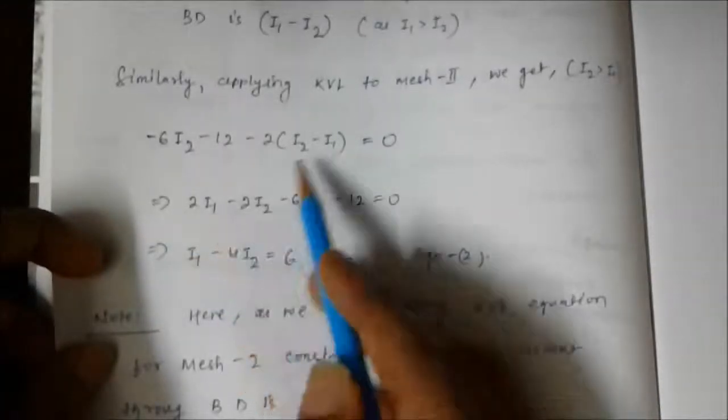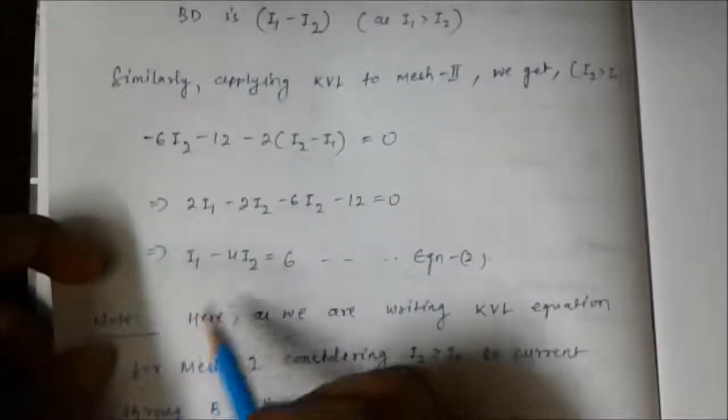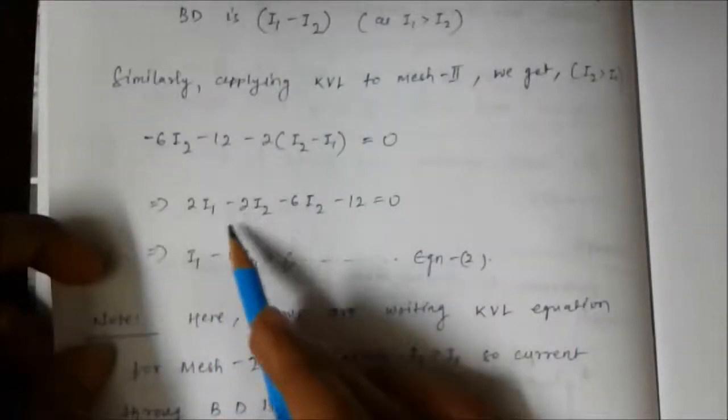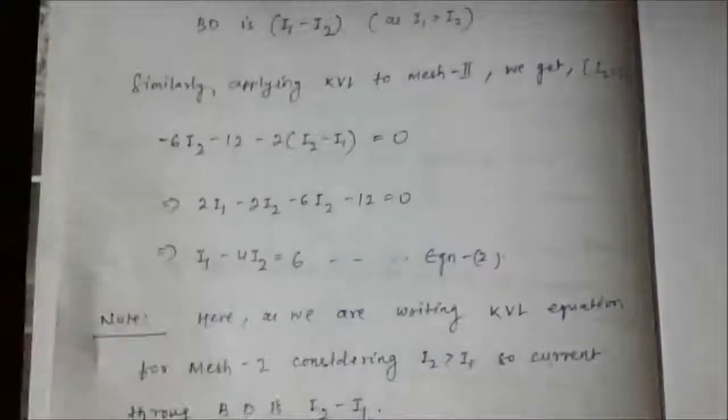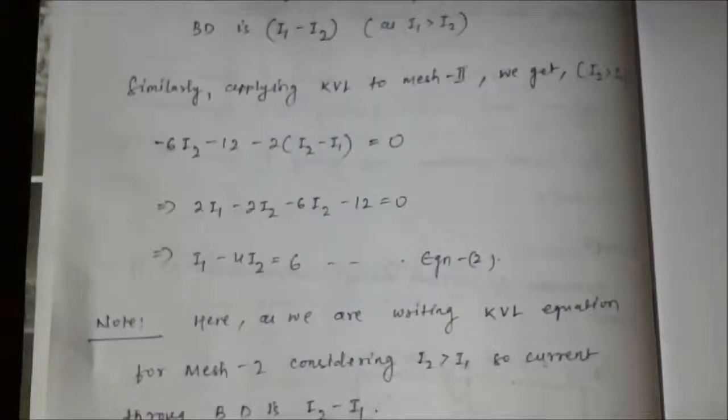Expanding: 2·i1 minus 2·i2 minus 6·i2 minus 12 equals zero. Dividing by 2 on both sides, we get: i1 minus 4·i2 equals 6. This forms equation two. We now have two equations to solve.